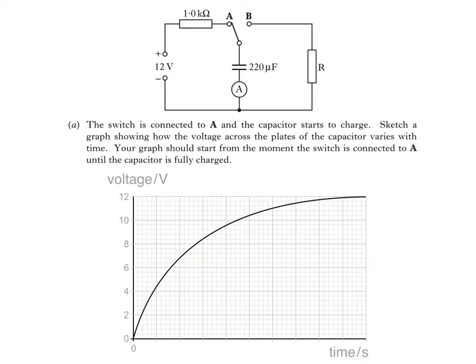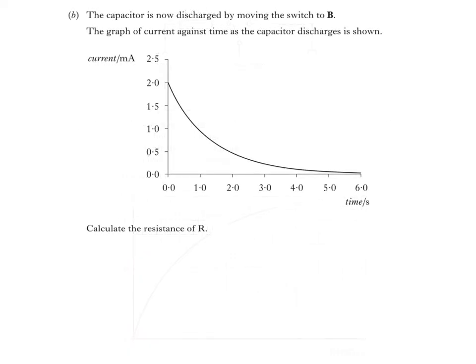Make sure you know the shape of the voltage-time graph as the capacitor discharges, as it would if the switch was connected to B. Here's part B. The capacitor is now discharged by moving the switch to B. The graph of current against time as the capacitor discharges is shown. We're asked to calculate the resistance R.